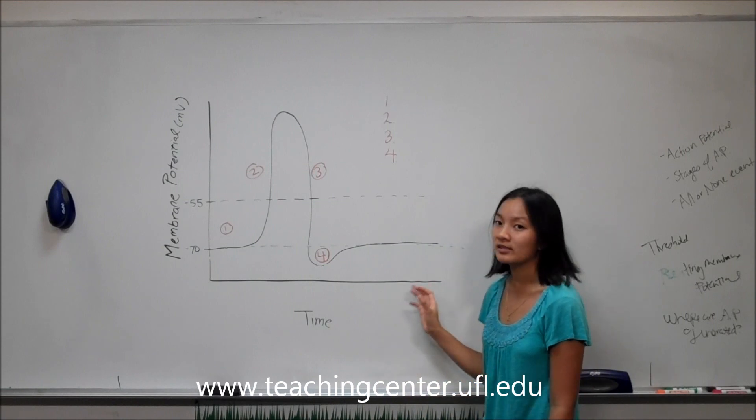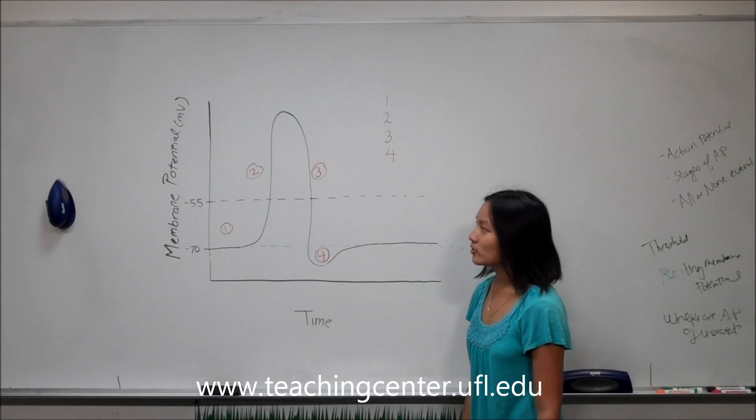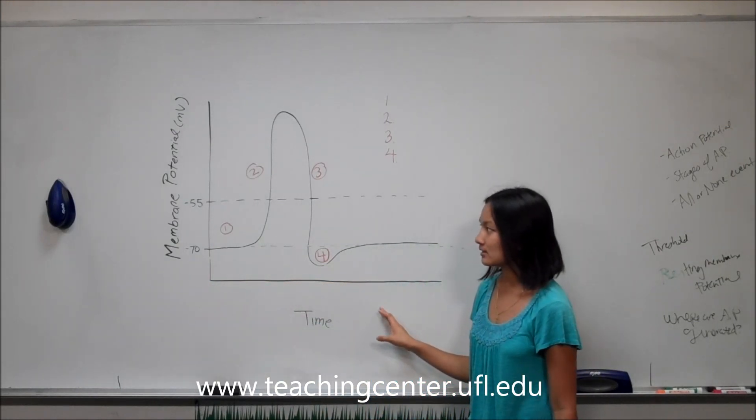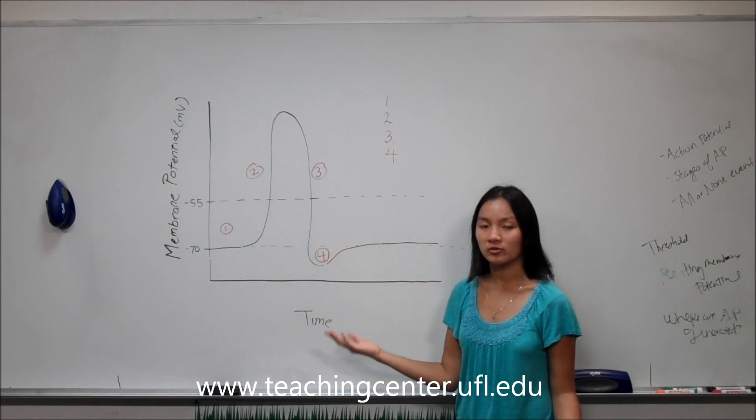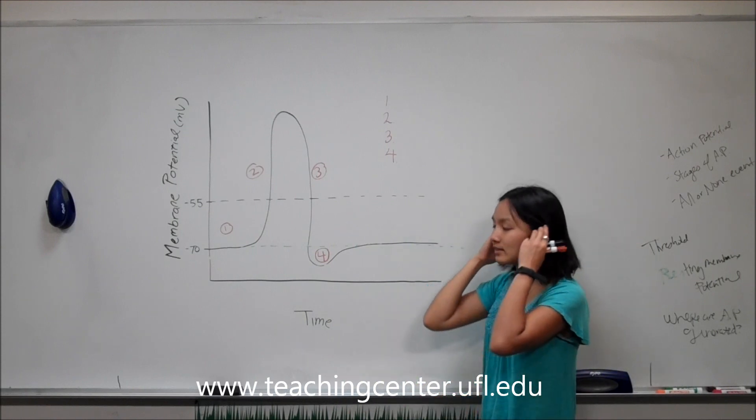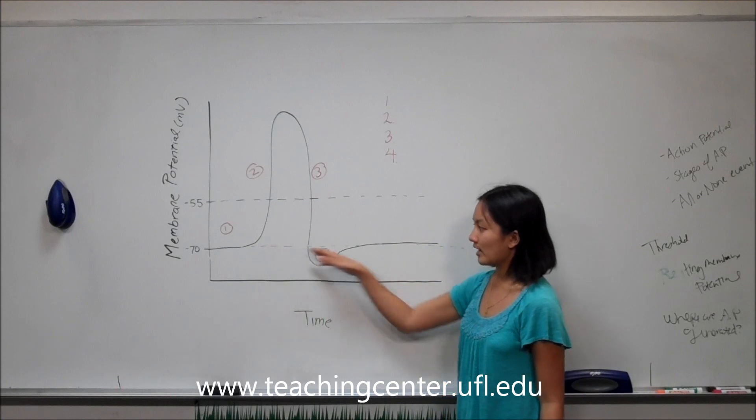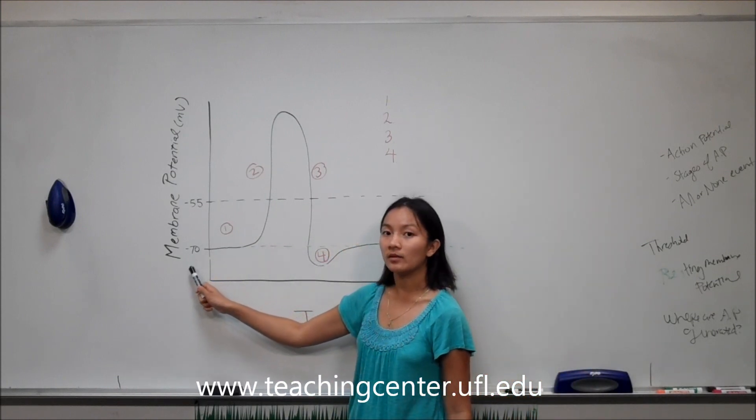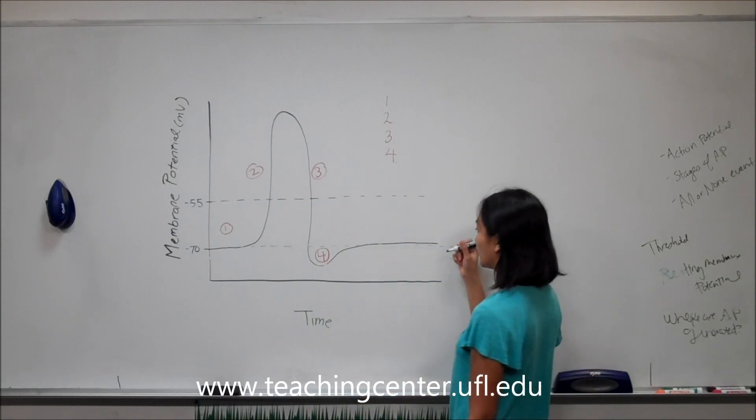So today we have a membrane potential versus time chart. You have membrane potential on the y-axis and time on the x-axis. This graph shows you what our membrane potential is within our neuron. Some basic guidelines that we'll need to establish beforehand is that this small dashed green line right here at negative 70 millivolts, this is going to represent our resting membrane potential.